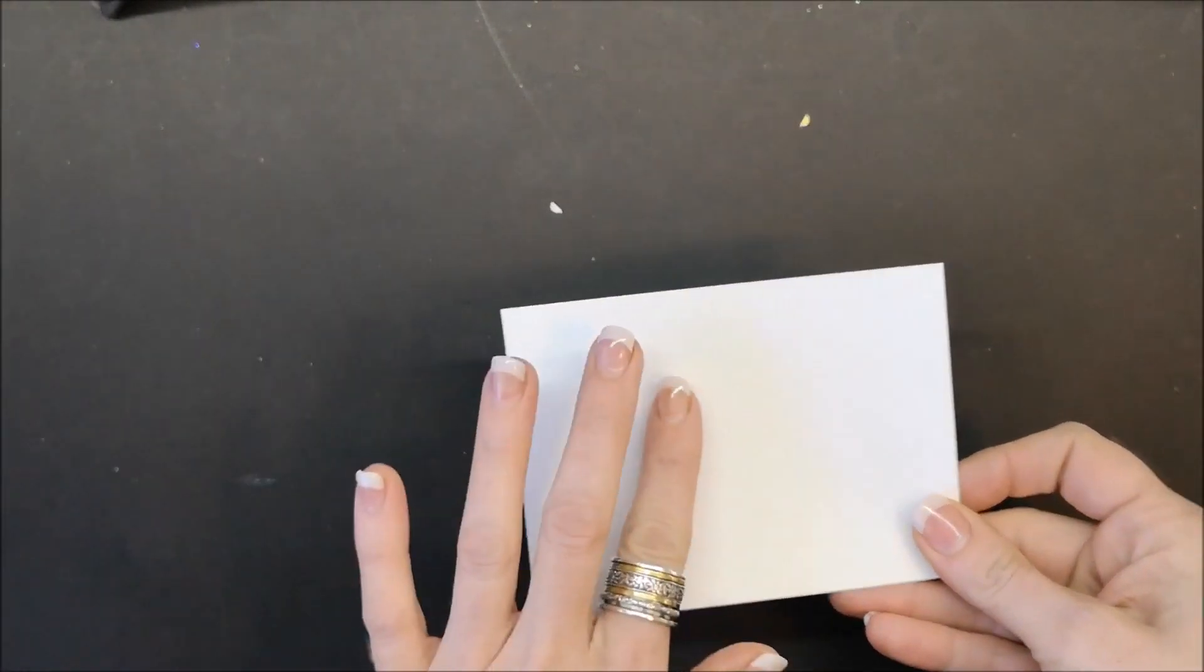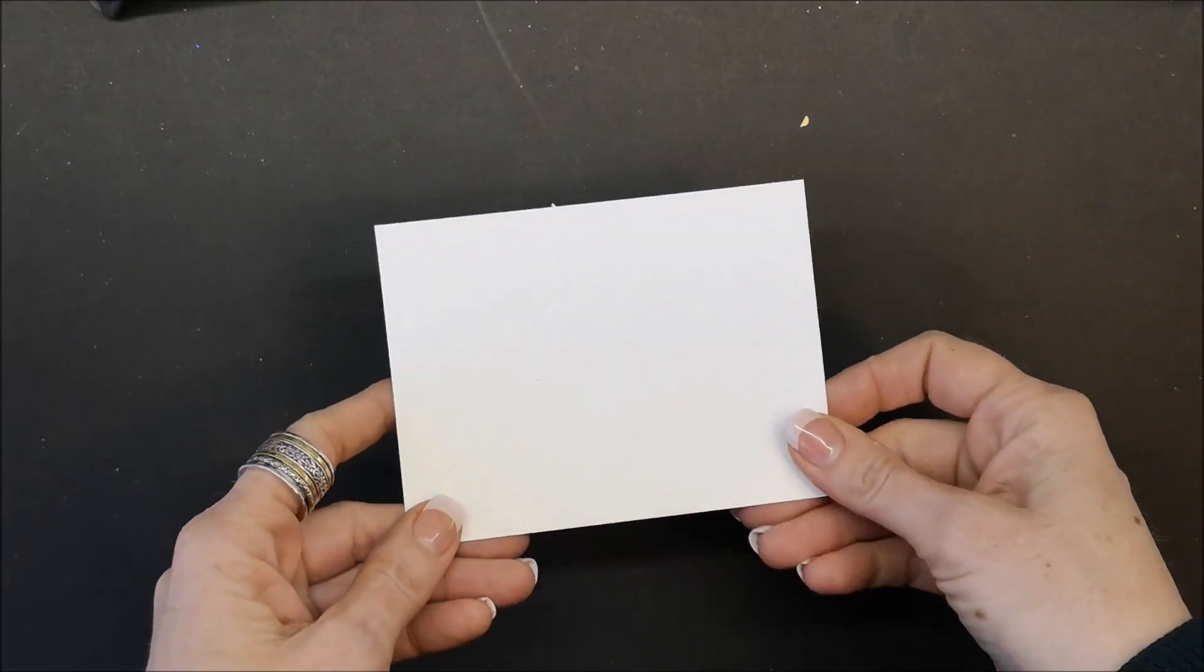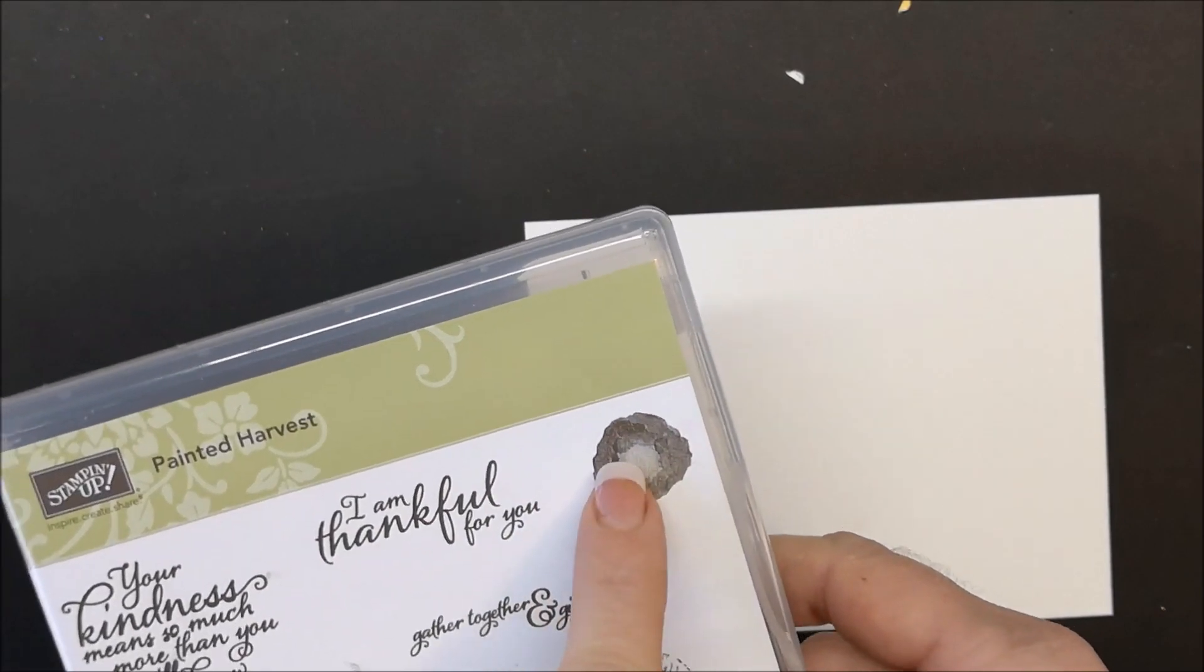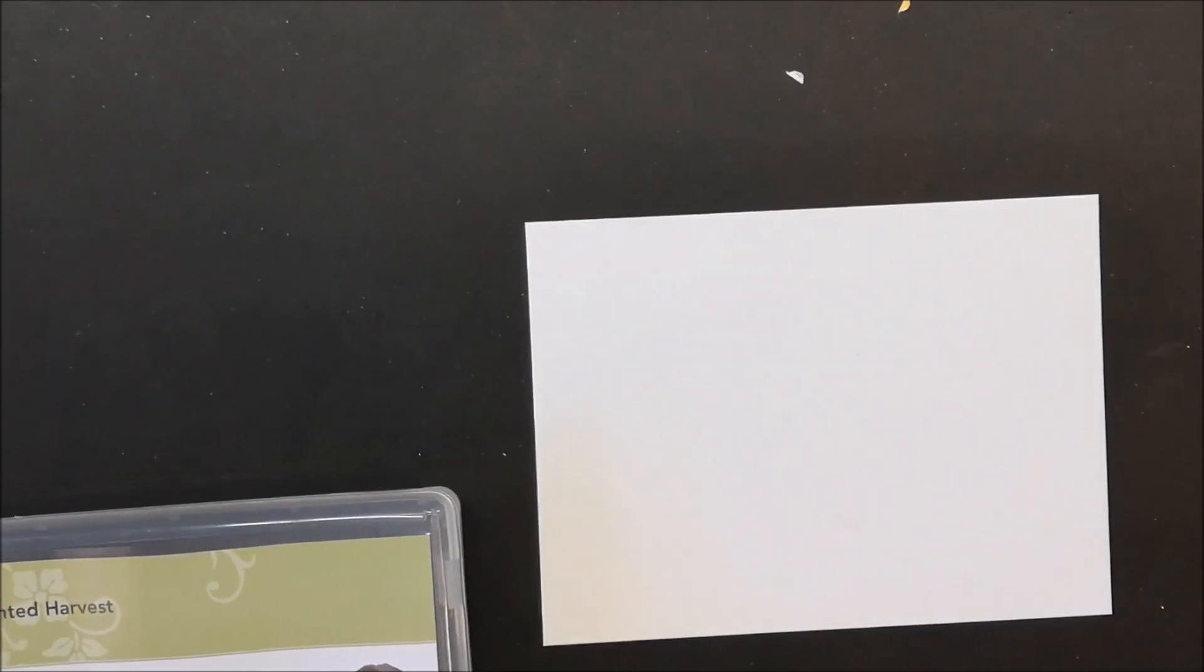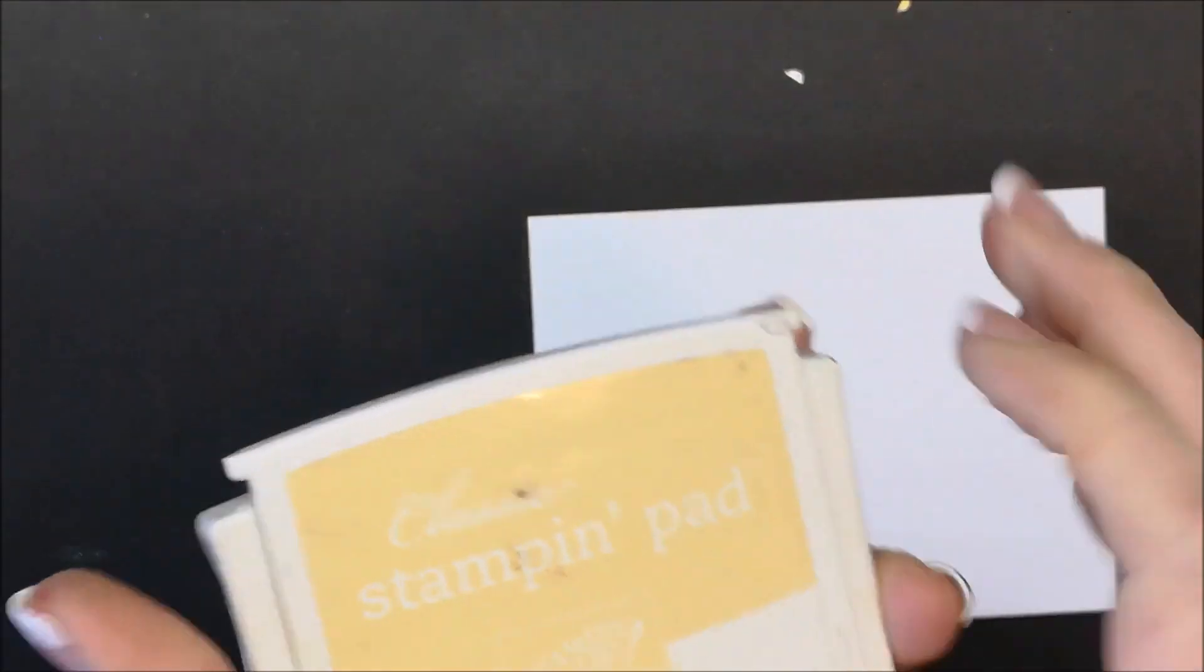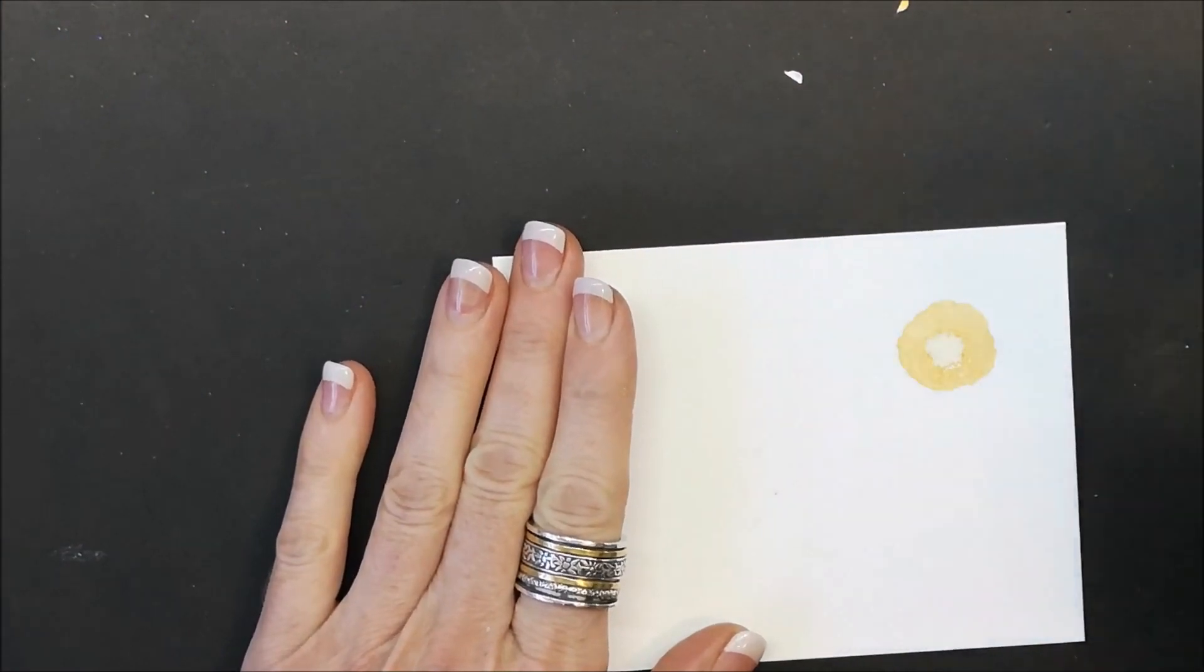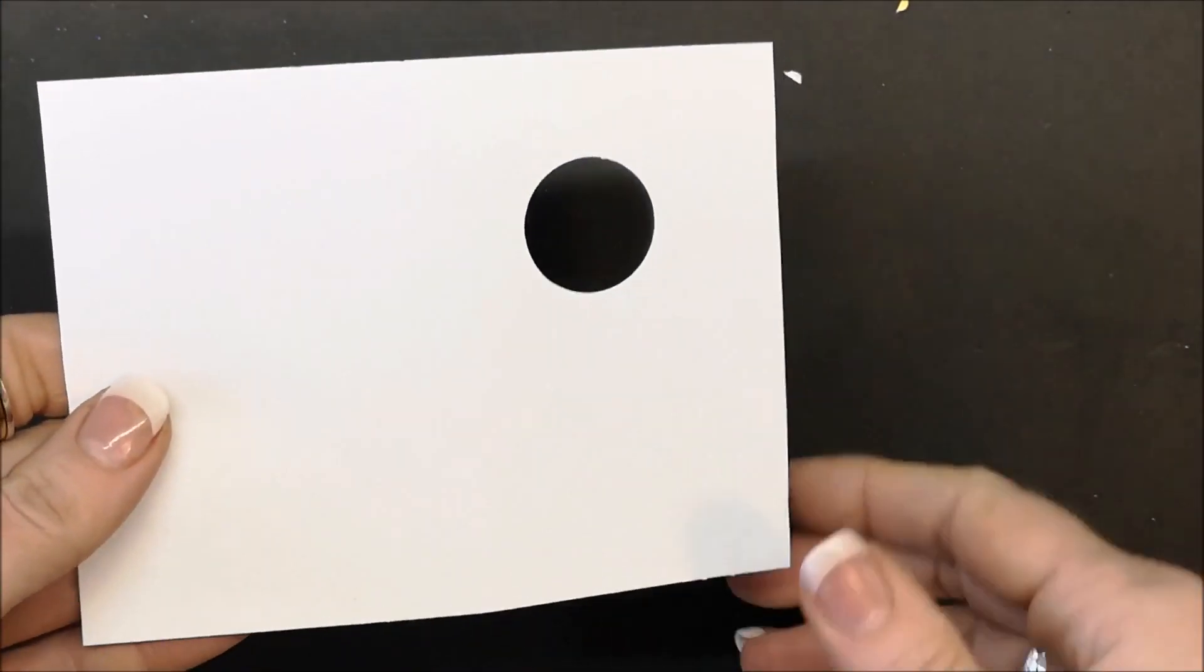The first thing I'm going to do is add some color to the background of the whisper white cardstock. I'm bringing in the Painted Harvest stamp set because I want to use this image here for the Sun. I'm bringing in my Soul Saffron ink pad, inking that up, stamping it down.